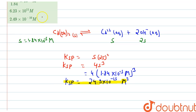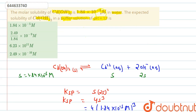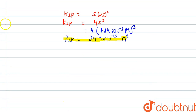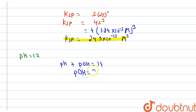Now the question asks for the expected solubility of Cd(OH)₂ in a buffer solution of pH 12. We are given pH = 12. Since pH + pOH = 14, we get pOH = 2.